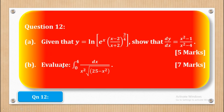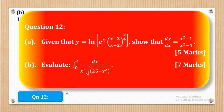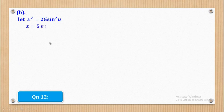Now we shall go to part B. Part B says: evaluate the integral from 0 to 4 of dx over x squared multiplied by the square root of (25 minus x squared), and it carries 7 marks. We shall let x be equal to 5 sin U, since the 25 comes from this expression. When I differentiate I come up with dx being equal to 5 cos U dU.